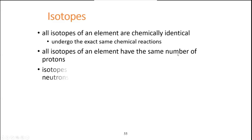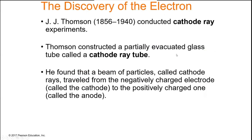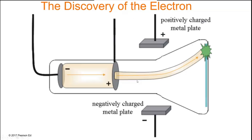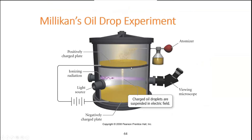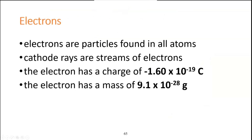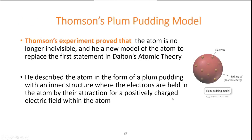Several key experiments helped discover subatomic particles. J.J. Thomson's cathode ray tube experiment identified the electron: he shot a beam through an electrical potential gradient and observed it curve toward the positive end, indicating a negatively charged particle in the atom. Millikan's oil drop experiment then quantified that charge as −1.6 × 10⁻¹⁹ coulombs, and determined the electron mass as 9.1 × 10⁻²⁸ grams.